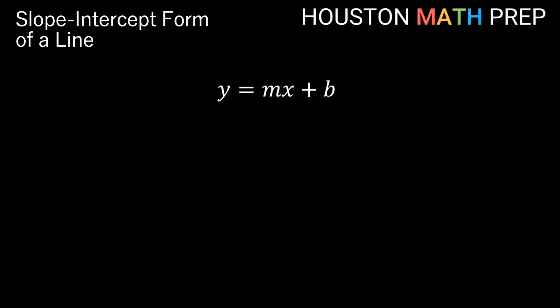The slope-intercept form of a linear equation looks like y equals mx plus b. We've got our variables x and y in the equation, but we also have the number m. m is the slope of our line — we talked about slope in our previous video in the series.